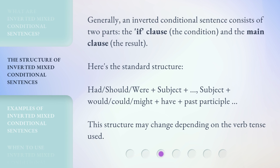Generally, an inverted conditional sentence consists of two parts: the if clause (the condition) and the main clause (the result). Here's the standard structure: Had / Should / Were + subject + would / could / might + have + past participle. This structure may change depending on the verb tense used.